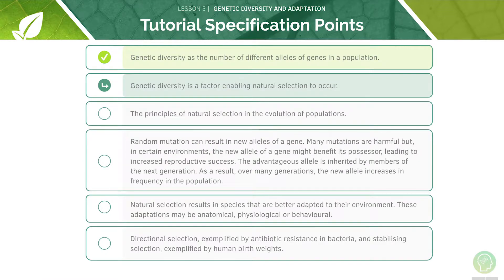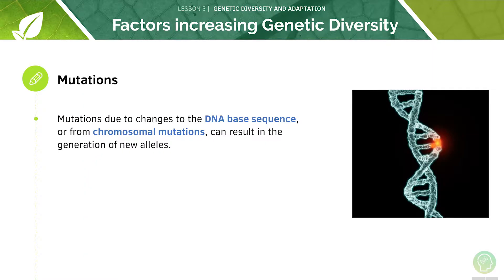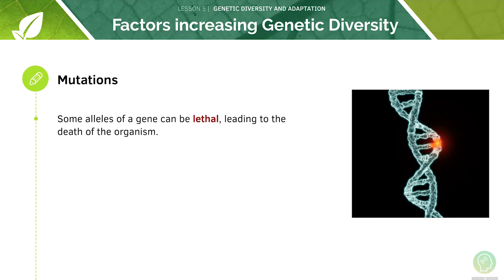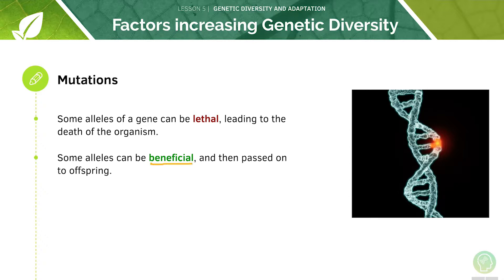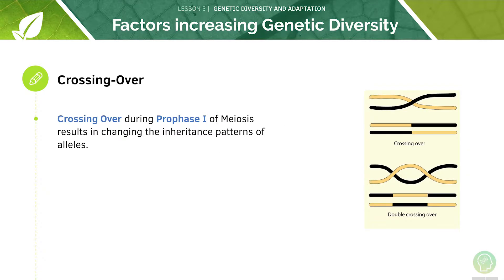Now we will look at the principle of natural selection. Mutations resulting from changes to the base sequence of DNA, or from chromosomal mutations, can result in the generation of new alleles. Some alleles of a gene can be lethal, resulting in the death of an organism. Some alleles can be beneficial and passed on to their offspring. Crossing over during prophase one of meiosis results in the changing inheritance patterns of alleles and sometimes even leads to new alleles being formed.